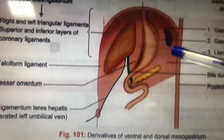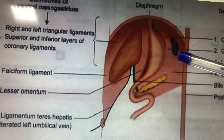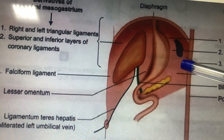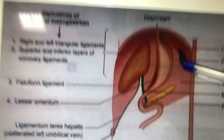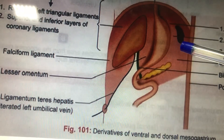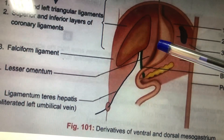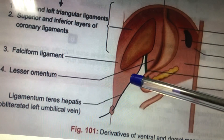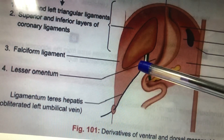The dorsal mesentery extends towards the posterior abdominal wall. One important organ that develops within the dorsal mesentery is the spleen. Then the stomach rotation begins.